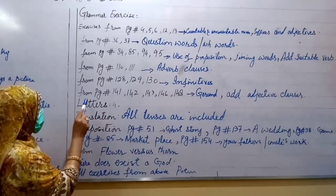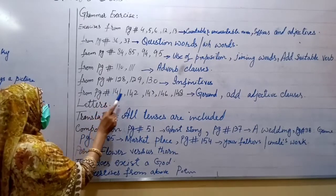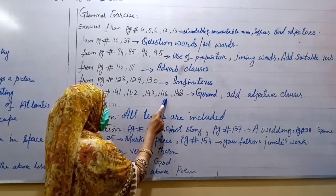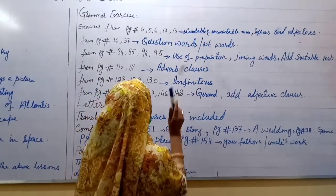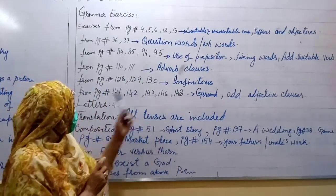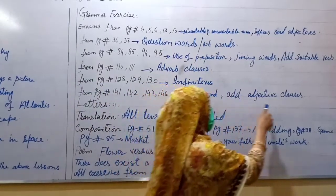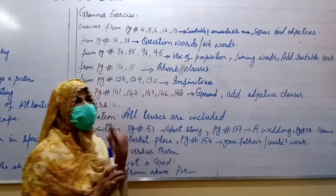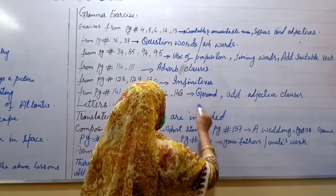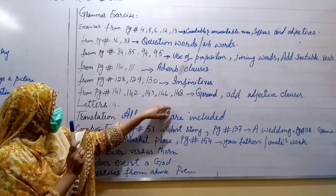Let's move towards the next exercise from page number 141, 142, 143, 146 and 148. What topics and which type of exercises in these pages? You have to add gerund and adjective clauses. In my previous lessons, I have explained in detail the types of gerund, each and everything. So you have understood this. Now, you have to do these exercises again as a revision work.